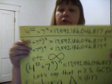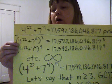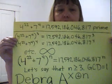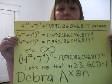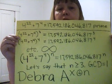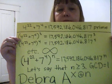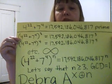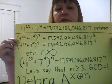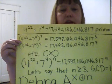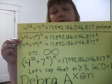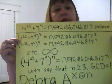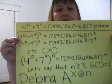4th sample: 4 to the 22nd plus 7 to the 4th equals 17,592,186,046,817 — another really big prime number. Take it to any power you want: 3rd, 4th, etc. Let's say that n is greater than or equal to 3. GCD equals 1.